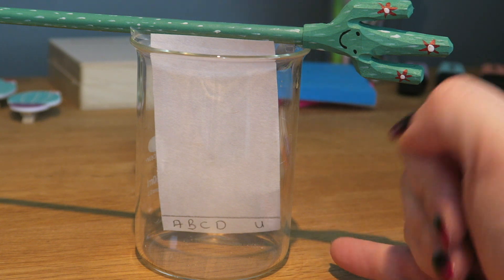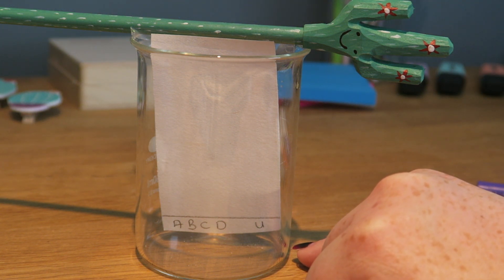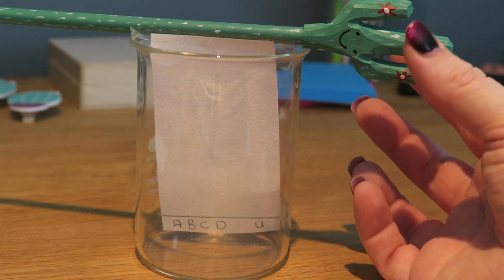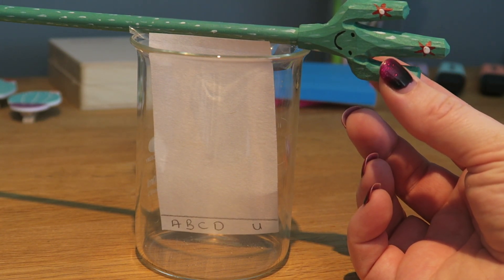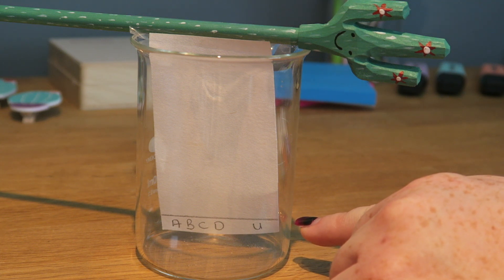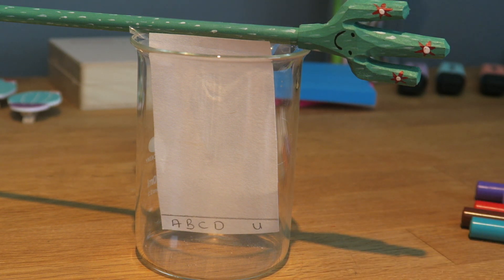If you touch the sides then the solvent, the liquid, the water in the bottom will run up the sides and ruin the experiment. When I put water in it is going to be below the level of the start line. Now I can put my dots on.